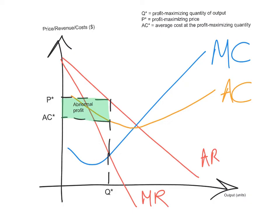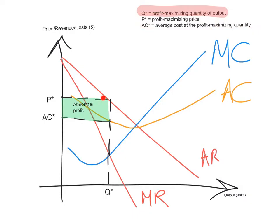This is how a profit maximizing monopolistically competitive firm maximizes its profit. Profit is maximized when you produce a level of output where marginal revenue intersects marginal cost. You draw a vertical line down — this gives you Q*, the profit maximizing quantity of output. Then you draw a vertical line upwards until you intersect the average cost curve, giving you average cost, and the demand curve (or average revenue curve), giving you the price. P* is the profit maximizing price and AC* is the average cost at the profit maximizing quantity. The rectangle shaded in green represents the monopolistically competitive firm's abnormal profit.